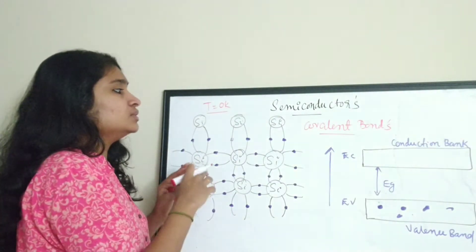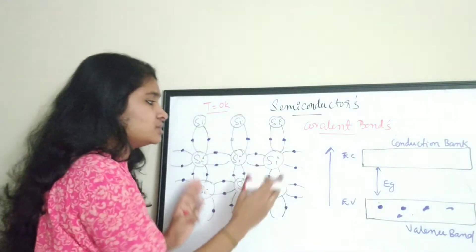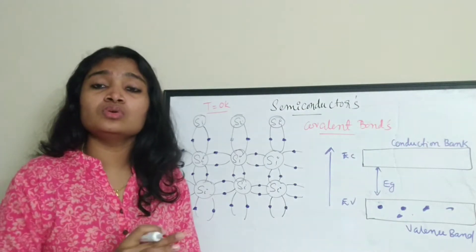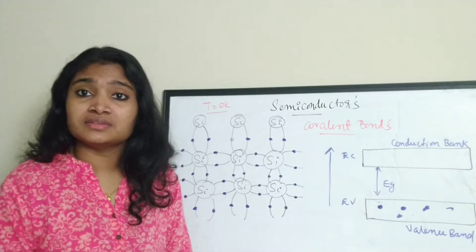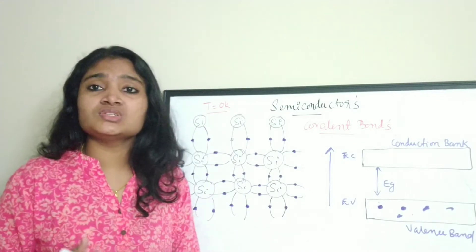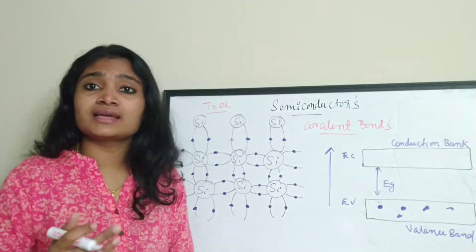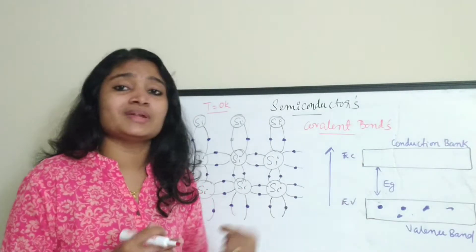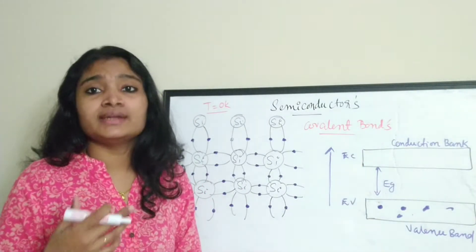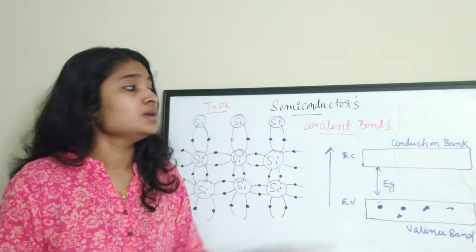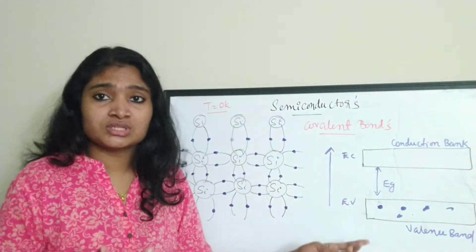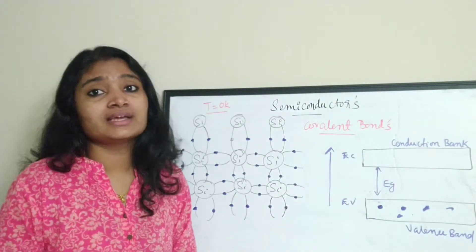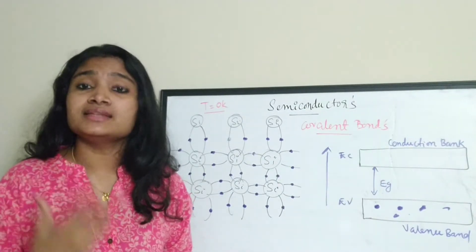At zero Kelvin there are no free electrons present in the crystal structure. Due to the absence of free electrons there is no current flowing and no conductivity, so the silicon crystal behaves like an insulator. In the energy band diagram, all electrons are present in the valence band and there are no electrons in the conduction band. For conductivity, electrons must be present in the conduction band.